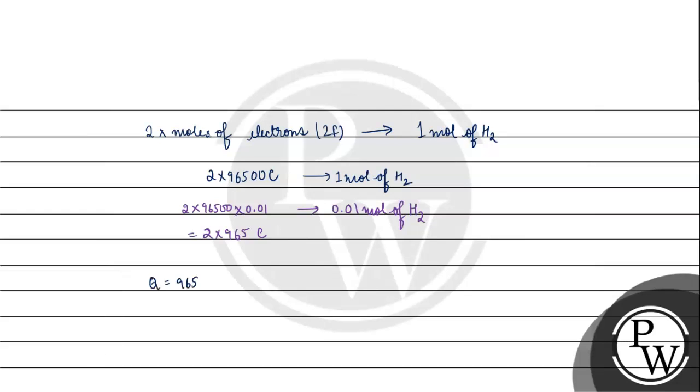We have charge equals to 965×2 coulomb. Current given is 10 milliampere, which is 10×10⁻³ ampere = 10⁻² ampere. Using Q = It: